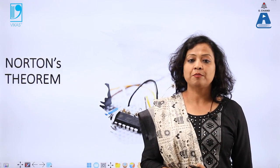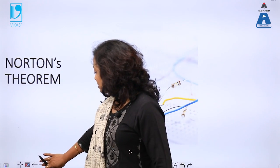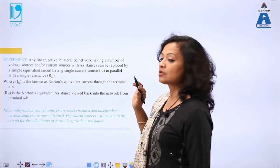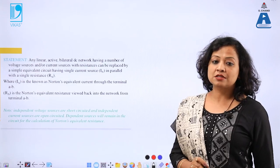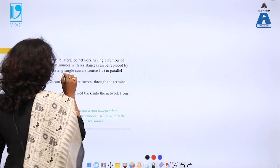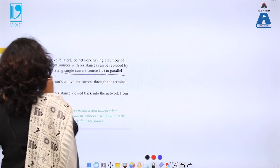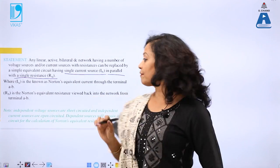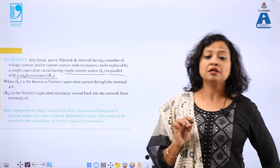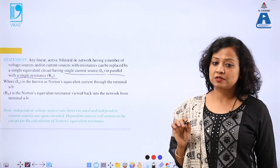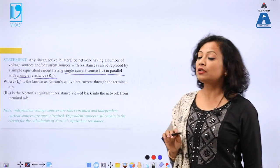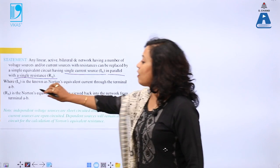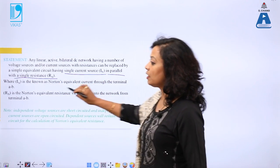Norton's theorem is a different technique or approach to find out current in the load resistance. There are certain steps — some common and some different — to find out current in the load circuit. The statement of Norton says that any linear active bilateral DC network having a number of voltage and current sources with resistance can be replaced by a single current source I_N in parallel with a single resistance R_N. This is the difference between Thevenin and Norton theorem: in Thevenin, we replace the internal circuit by a voltage source in series with resistance.